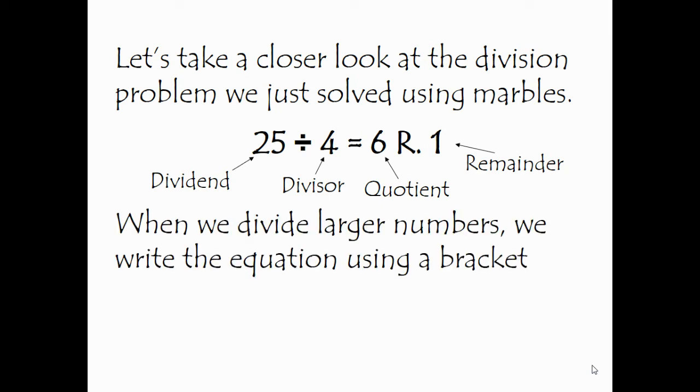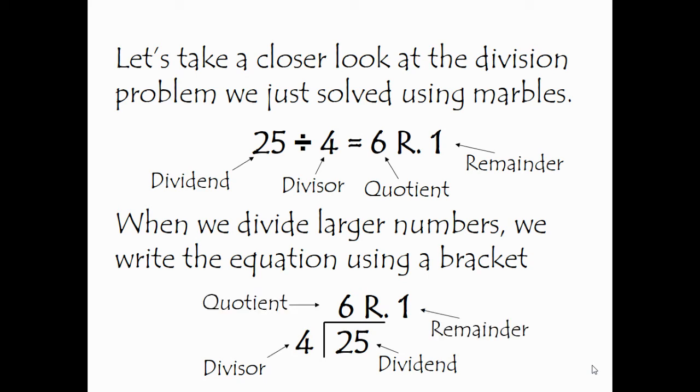And that looks like this. The dividend goes under the bracket. The divisor goes out front. The quotient, or answer, goes on top, and the remainder goes right next to your answer. This is just another way to write 25 divided by 4.